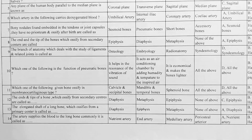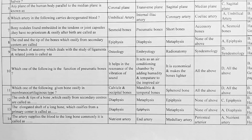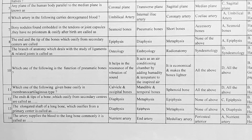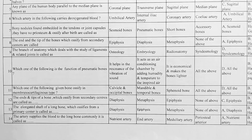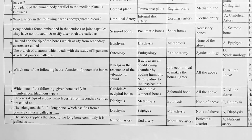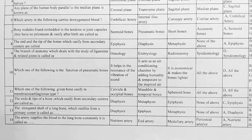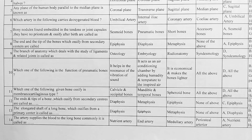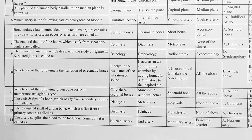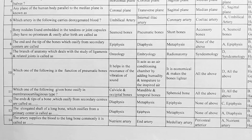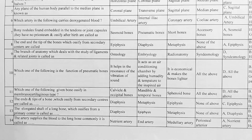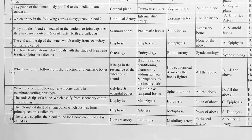Next, the end and the tip of bones which ossify from secondary center are called — options: A. epiphysis, B. diaphysis, C. metaphysis, D. none of the above. Correct option is A, epiphysis.